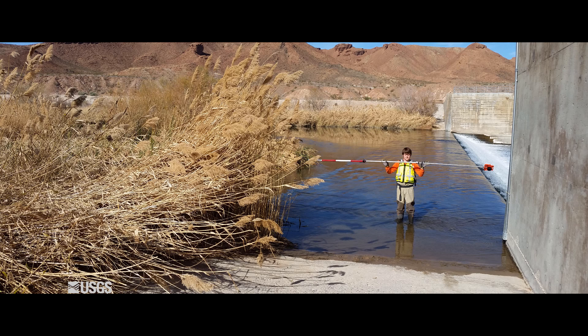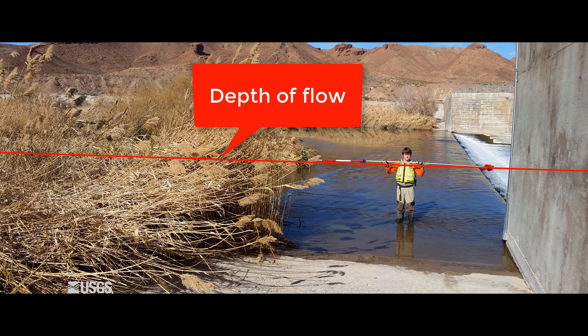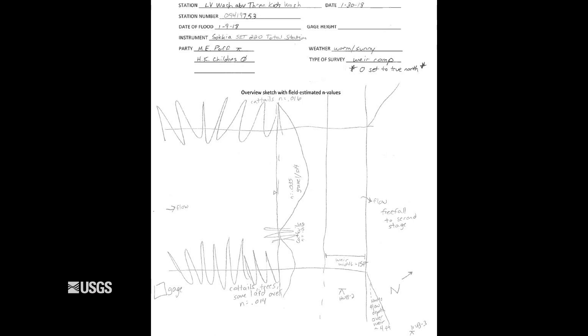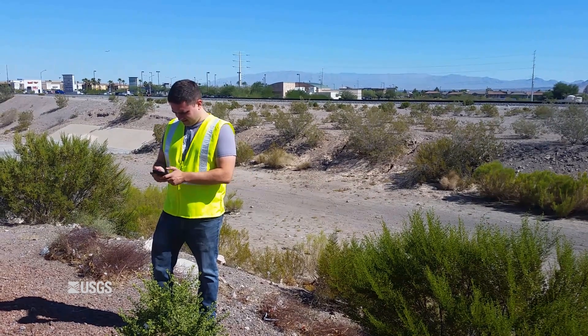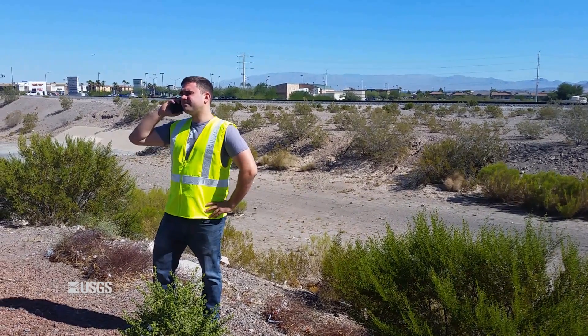This is also a good time to take a picture of the road. If you can do it safely, one of the best pictures you can take is your rod person standing on the crown of the road, holding the rod horizontally approximately at the depth of flow going over the road. Don't forget your site sketch and cross section sketches. You should now have enough data to compute the road overflow indirect measurement. Remember to close your survey on the gauge reference mark or temporary reference mark you established at the beginning of the survey. If you need help in the field, call your supervisor, surface water specialist, or indirect measurement specialist.